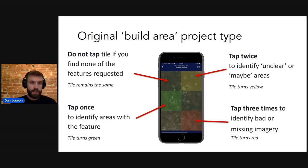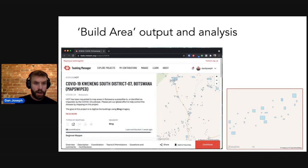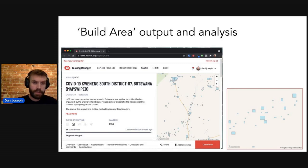The first mission type in MapSwipe was called Build Area, and it shows you six tiny squares of satellite imagery at a time. You tap the tiles once to identify some feature, twice if you're not sure, and three times to identify bad imagery. So users would go through a big swath of area, and after identifying where, for example, buildings are, that data could be fed into the tasking manager so that people, when coordinated to map an area, could go straight to where there are buildings and not have to spend a lot of time searching through desert or forest.